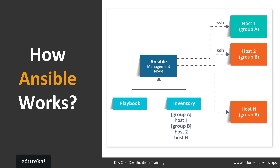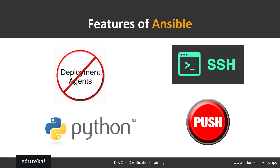Ansible works by connecting to nodes and pushing out small programs called Ansible modules, executing them over SSH by default, then removing them when finished. The management node — the controlling node visible on screen — controls the entire execution of the playbook. The inventory file provides the list of hosts where Ansible modules need to run, and once the product is installed, Ansible removes the code that was copied and executed on the host machine.